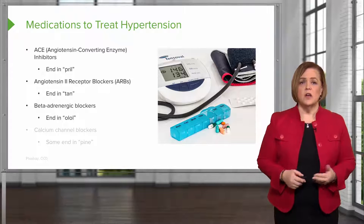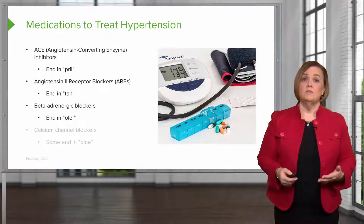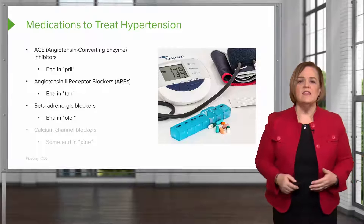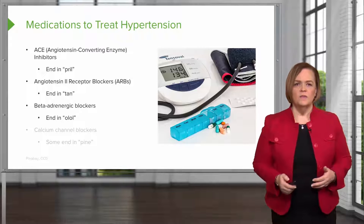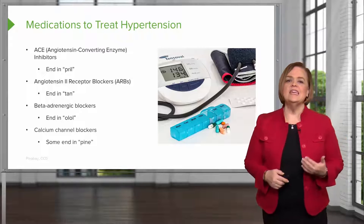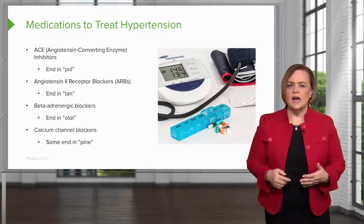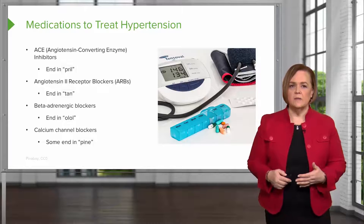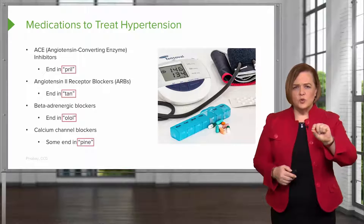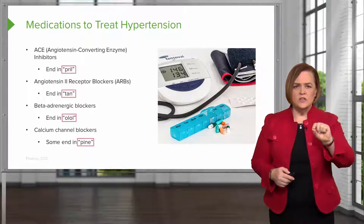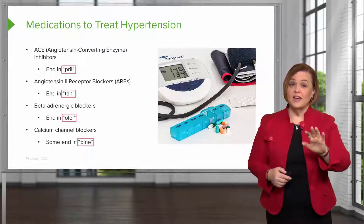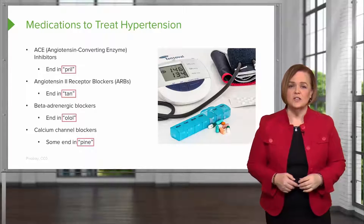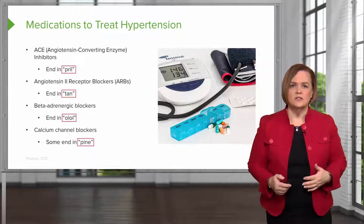Beta-adrenergic blockers are also called beta blockers for short, and they end in -olol, O-L-O-L. And finally, calcium channel blockers — some of them end in -pine, P-I-N-E. So make sure you circle those endings in your notes; that's going to be very helpful as you're memorizing generic drug names and which family they belong to.